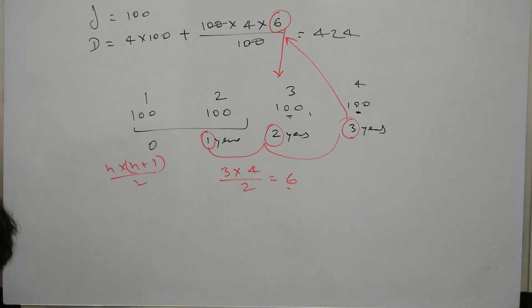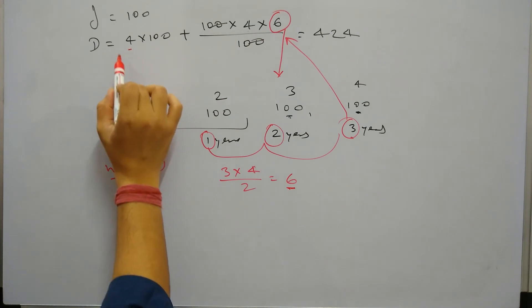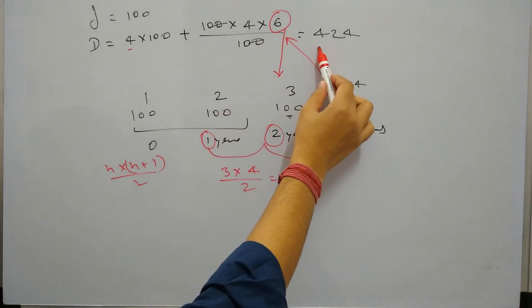So no matter what is given, and if you see, even because in this type of problem we will always assume that installment is of 100 rupees, so you can directly get this number of years or number of months, whatever is given in the question, multiplied by rate of interest.